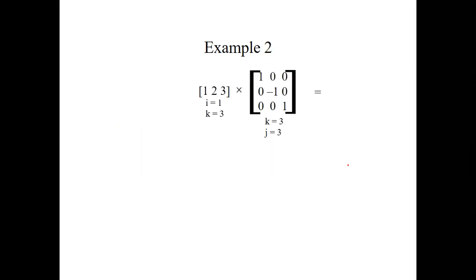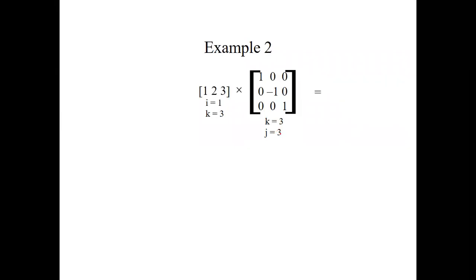Now let's do a second example: multiplying a 1×3 matrix with a 3×3 matrix. For the first matrix i=1 and k=3; for the second matrix k=3 and j=3. Can these two matrices be multiplied? Yes, because k is the same for both matrices.